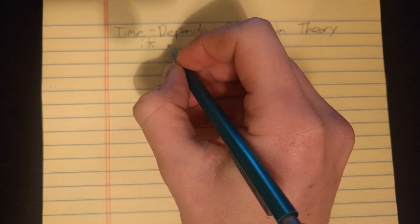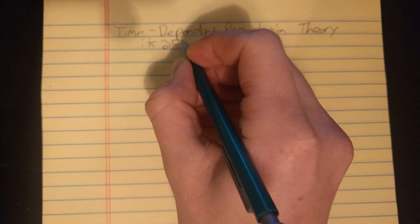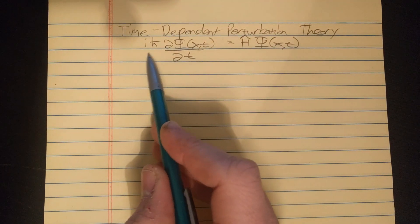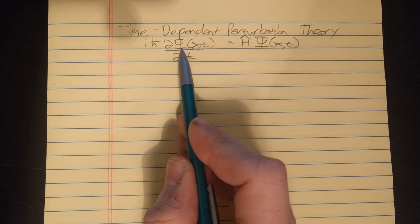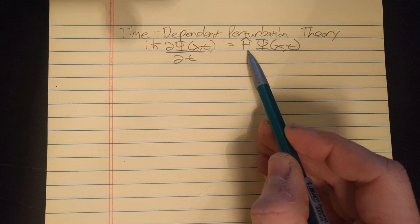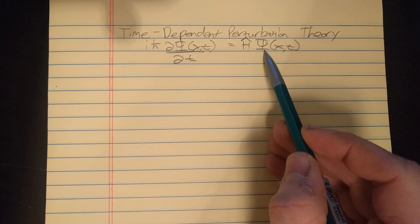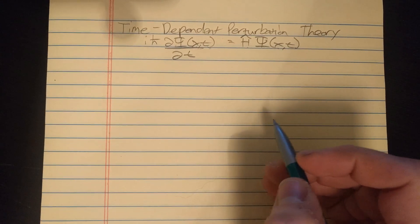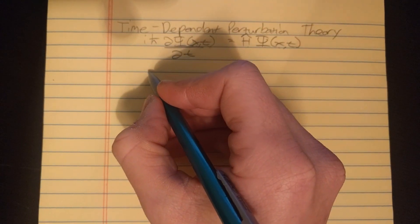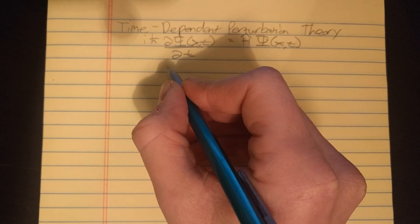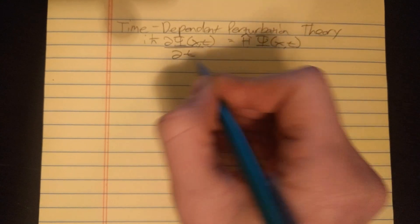What we're going to start with is by knowing the time-dependent Schrödinger equation. We write i h-bar d/dt of psi, capital psi, which depends on position and time, equals the Hamiltonian times capital psi, again depends on our position in space and on time. And now perturbation theory says we can write our Hamiltonian as a sum of an unperturbative Hamiltonian plus a perturbative part.